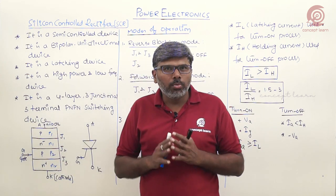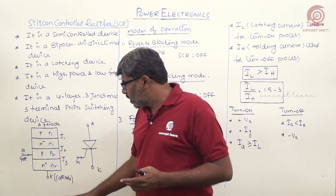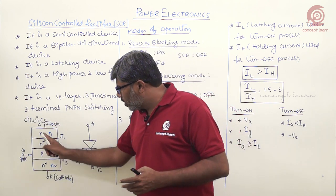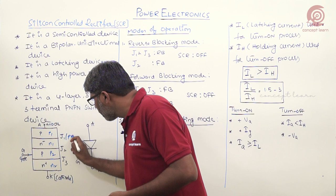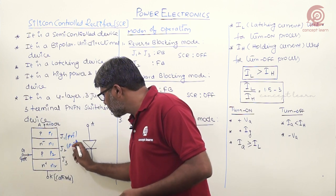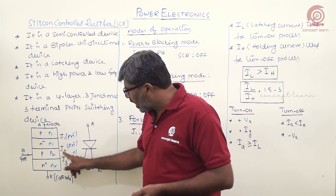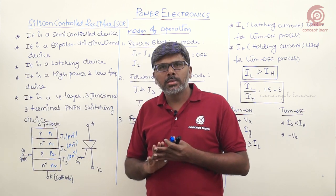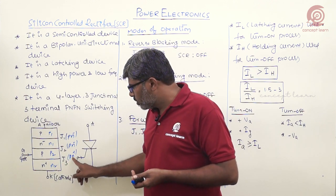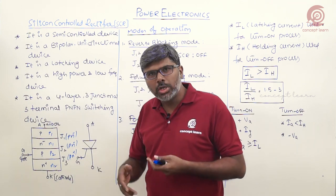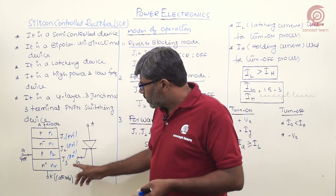The N-minus layer is lightly doped, so charge carriers are fewer and resistivity is high, whereas in the N-plus layer resistivity is low. Because of these four layers, there are three junctions: J1 (P–N-minus), J2 (N-minus–P), and J3 (P–N-plus). J1 and J2 each have one lightly doped layer, so they can block more voltage, whereas J3 is formed from moderately and highly doped layers, so it blocks less voltage.